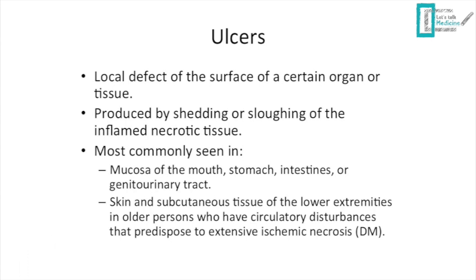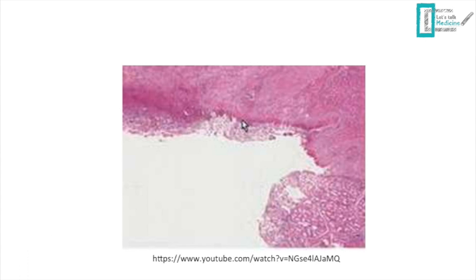The final morphological pattern is ulcers — local defects on the surface of an organ or tissue produced by sloughing of inflamed necrotic tissue. They are most commonly seen in the gastric and intestinal mucosa, as in peptic ulcer disease. They also occur in the genitourinary tract (some STDs), skin and subcutaneous tissue of lower extremities, and in older patients with diabetes mellitus or circulatory disturbances like atherosclerosis.